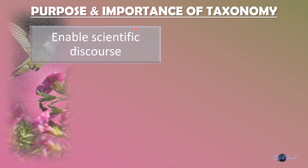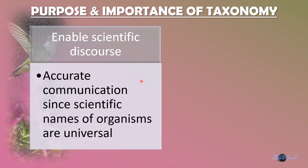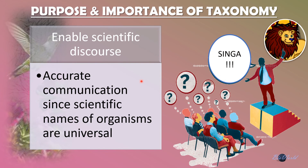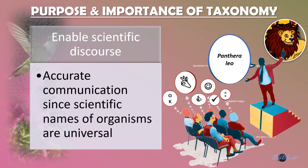The next importance of taxonomy is to enable scientific discourse. This involves communication between scientists at an international level. Imagine if a scientist were to explain his biological findings using his native language — the international audience will not be able to follow. However, if you use the scientific names, which are universal, then the audience will be able to appreciate your findings. This provides for accurate communication between scientists.